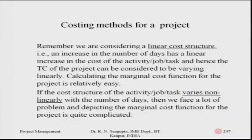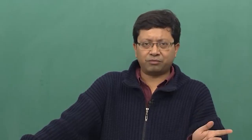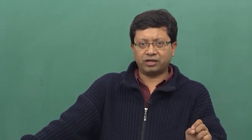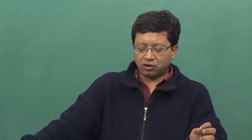When doing this simple problem of the cost structure totalling four forty, we consider a linear cost structure — an increase in the number of days results in a linear increase in total cost, with no marginal rates at a fixed rate. If the cost structure varies non-linearly with the number of days, depicting the marginal cost function becomes quite difficult to conglomerate the overall cost structure.